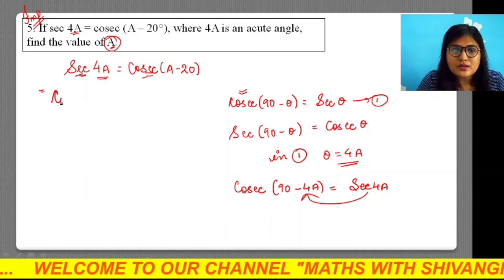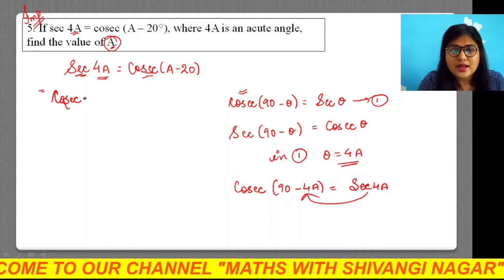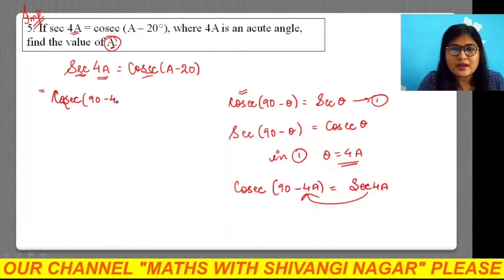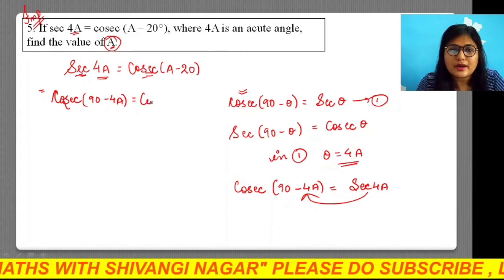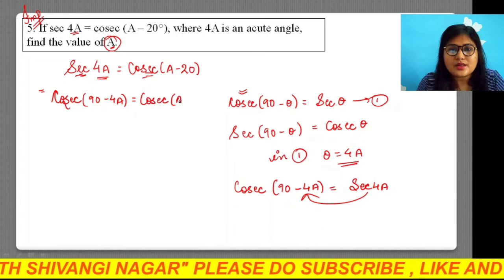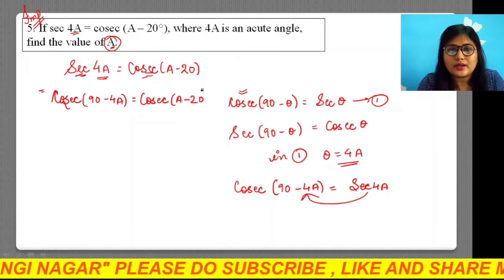So we have cosec (90° - 4A) is equal to on the right side cosec (A - 20°), clear?